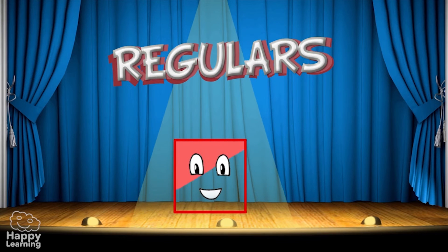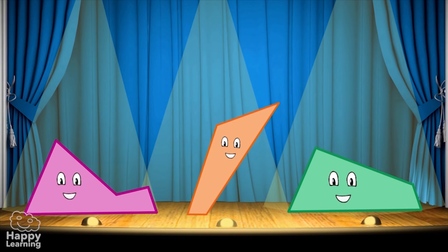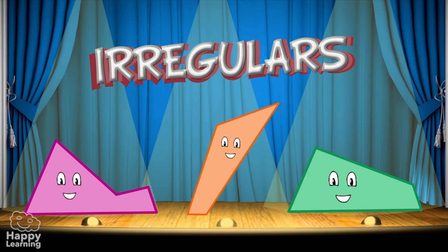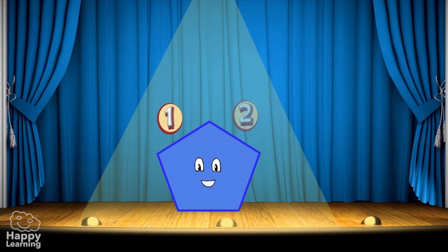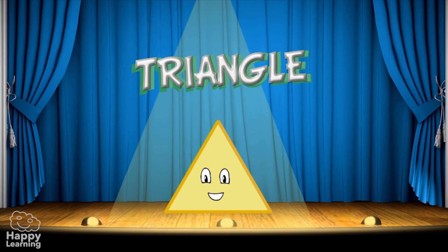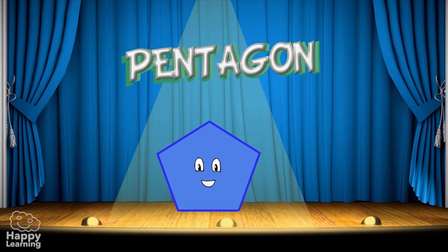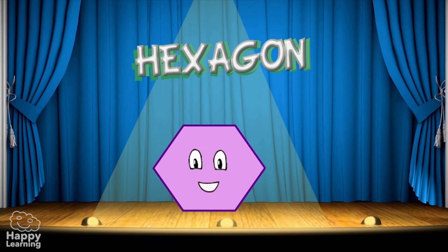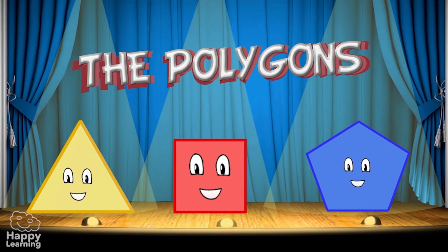So let's remember the important things about polygons. A polygon is formed by a closed polygonal line and the space inside it. A polygon has several elements: sides, corners or vertices, and angles. A polygon is regular if all its sides are the same length and all its angles are equal, and irregular if the sides and angles are not equal. Polygons can be classified by the number of sides: three sides — triangles; four sides — quadrilaterals; five sides — pentagons; six sides — hexagons.